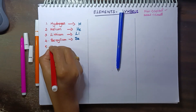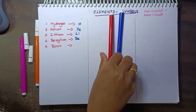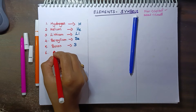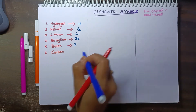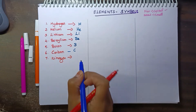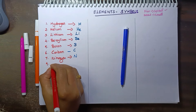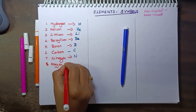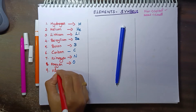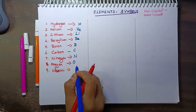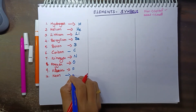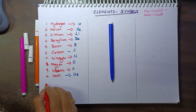Hydrogen, helium, lithium, beryllium, boron — next is carbon. Carbon's symbol is C. Then nitrogen, symbol N. Then oxygen, symbol O. Then fluorine, symbol F. Next is neon — nitrogen already uses N, so neon is Ne: capital N, small e.